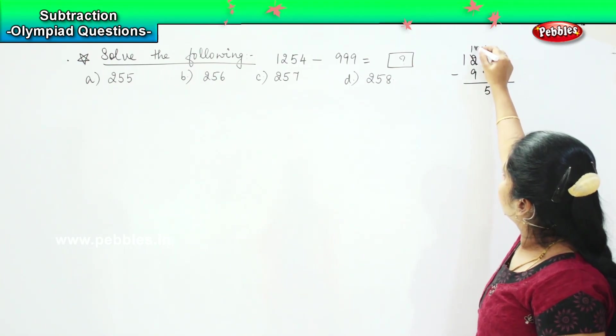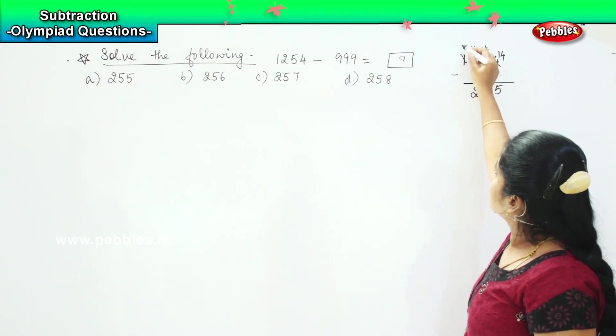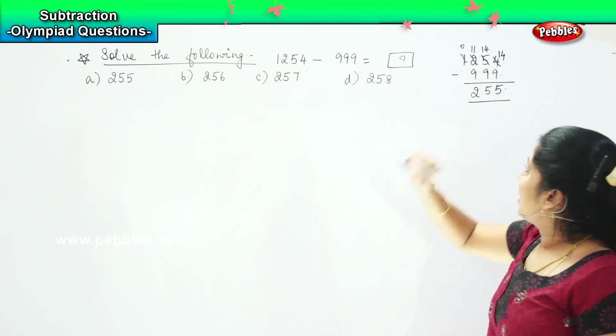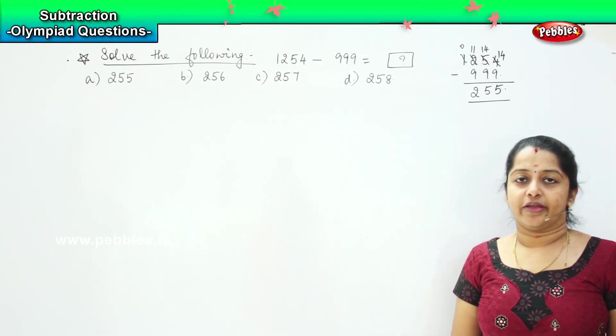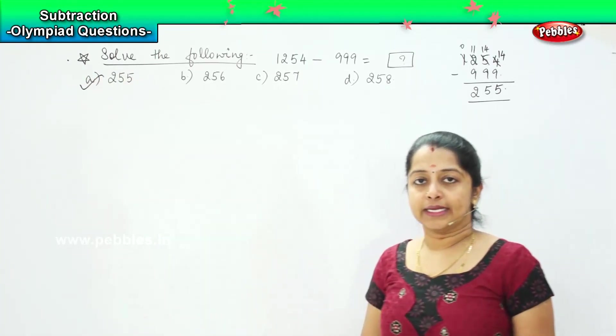Then this will become 11. 11 minus 9 is 2. And here this will turn as 0. So, my answer is 255. Where can you find it? It is option A. Clear?